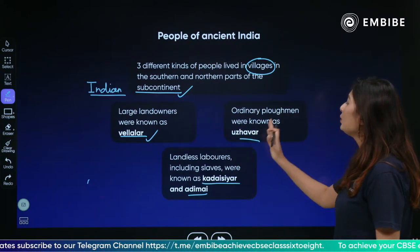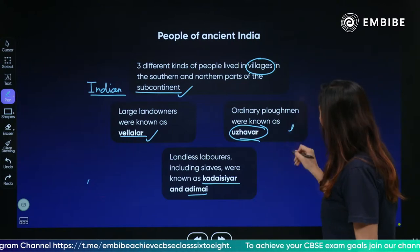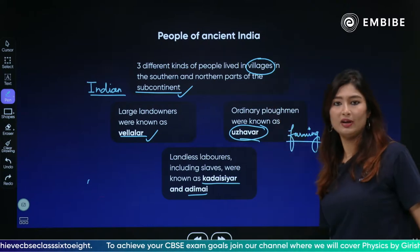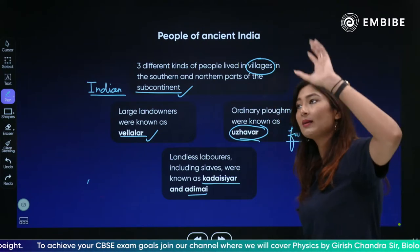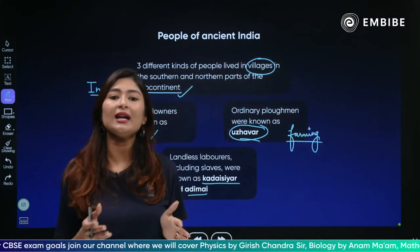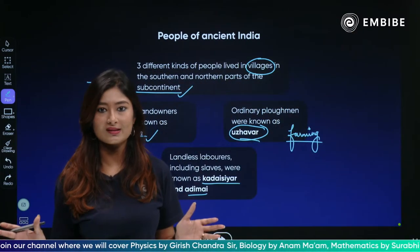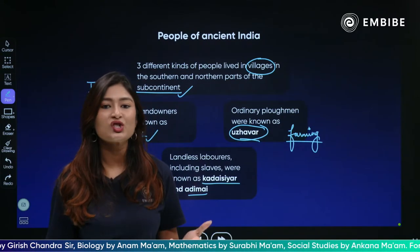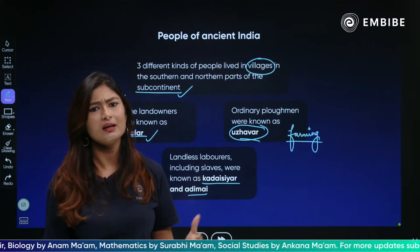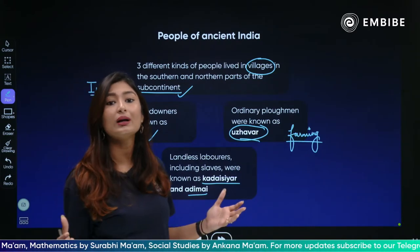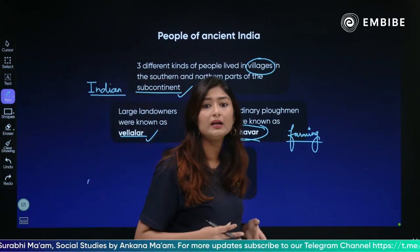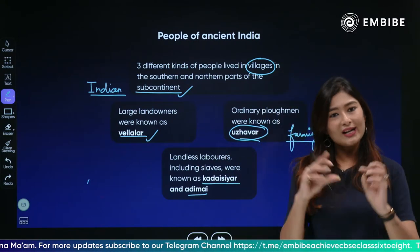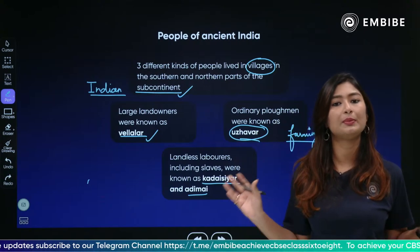Then there were the ordinary plowmen, known as the Uzzawar — basically people associated with the activities of farming. We must keep in mind that back in ancient India, very different kinds of jobs did not exist. The primary work people were associated with was farming. Primarily you would have farmers, then some traders, then soldiers and warriors who worked for the king — very limited jobs that people were associated with.